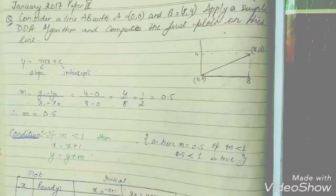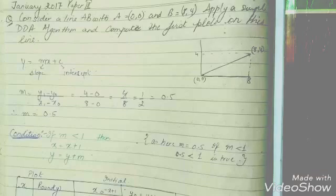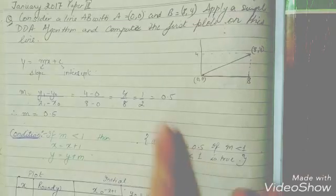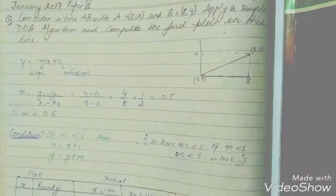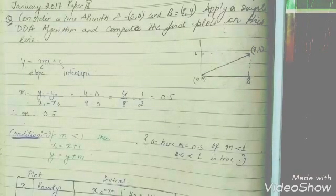So for calculating the slope, we can compute it by using this formula: Y1 minus Y0 upon X1 minus X0. Where Y1 is 4 and Y0 is 0, X1 is 8 and Y0 is 0. By subtracting them, we come up with 4 upon 8, which is 1 upon 2, and our answer is 0.5. So here we can say that this value of slope is 0.5, and on the basis of the value of the slope...